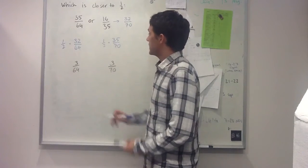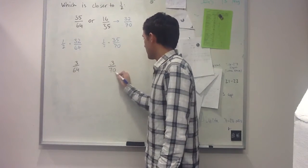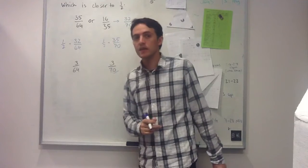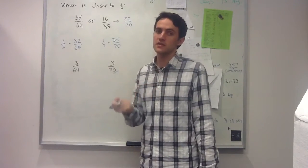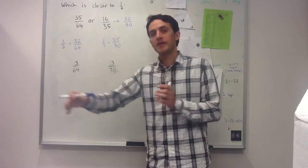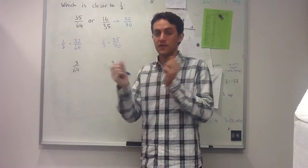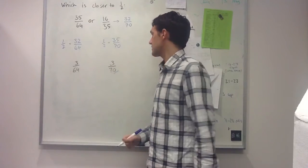In this case, I can see that 70ths are smaller than 64ths. As the denominators get larger, the fraction represents a smaller number.